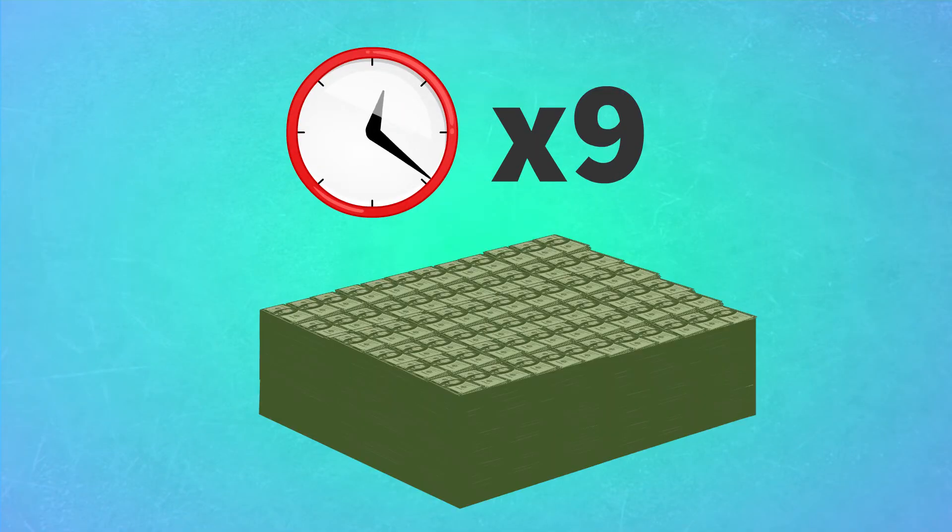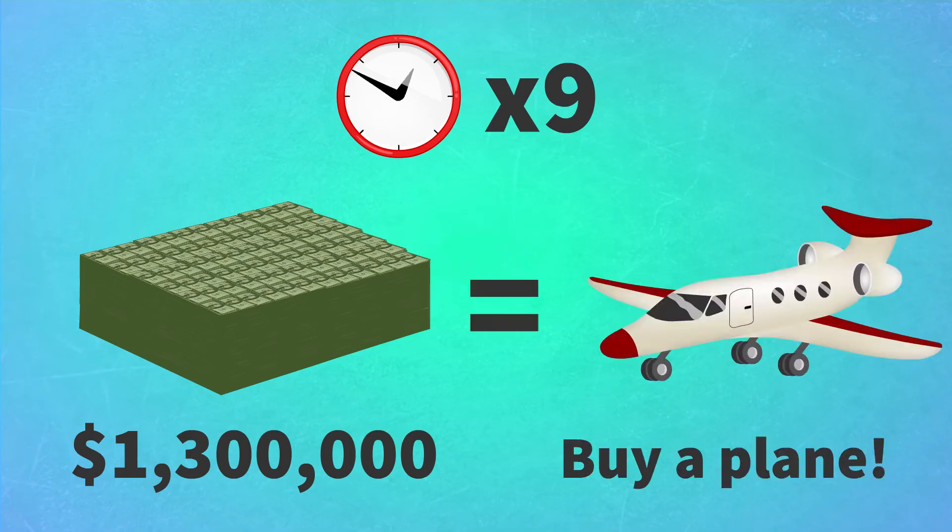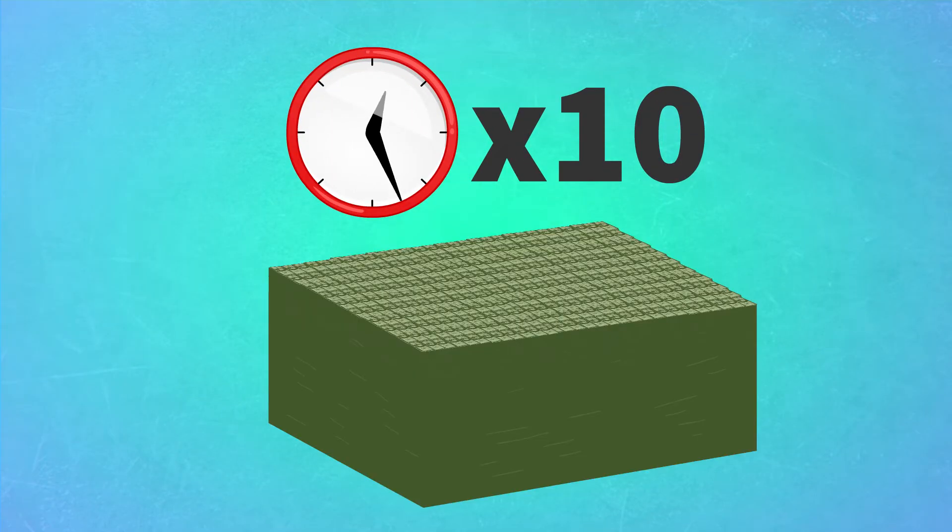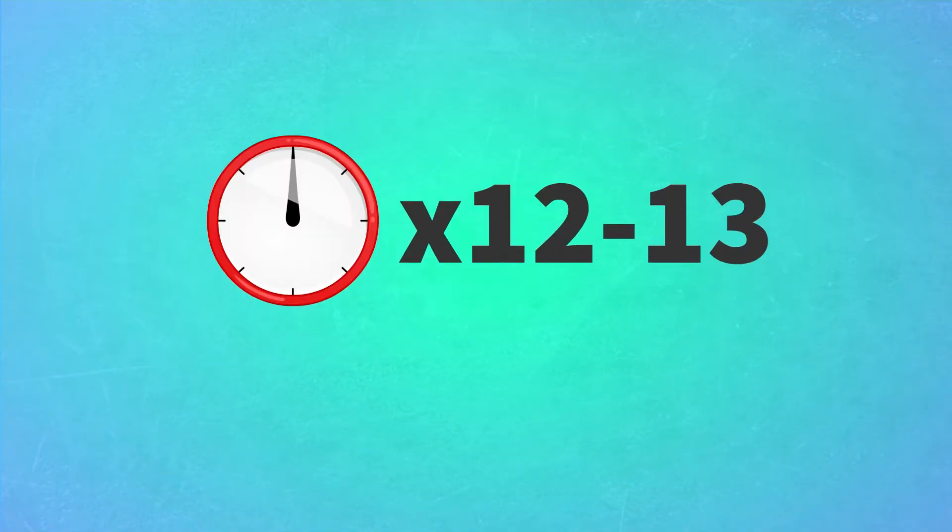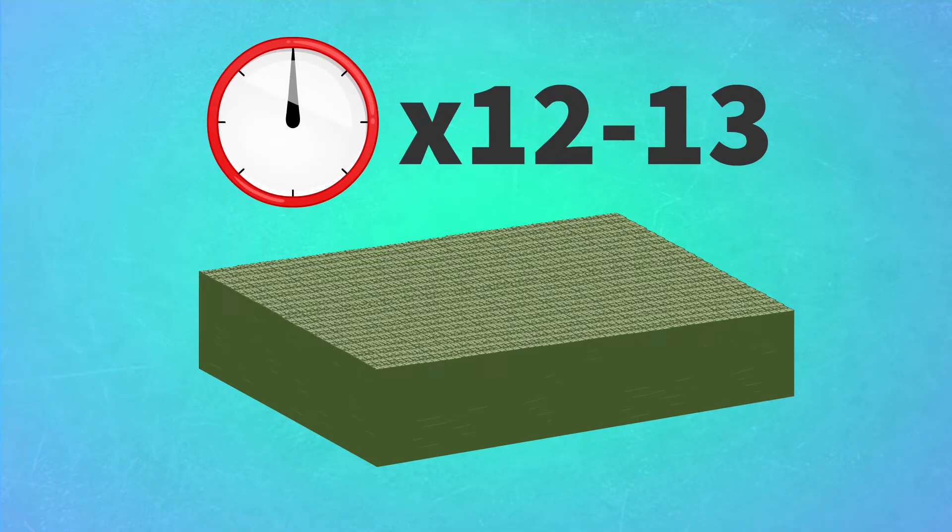At nine hours, you have more than one point three million dollars. Why not buy a small plane? At ten hours, you have more than ten million dollars and have discovered that getting rich can also be boring. And somewhere between twelve and thirteen hours, you become a billionaire.